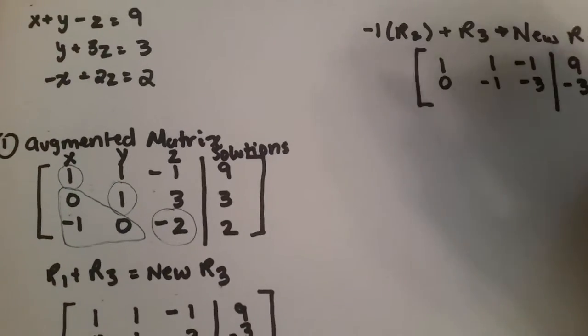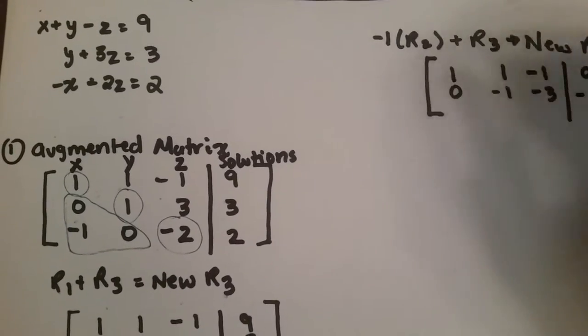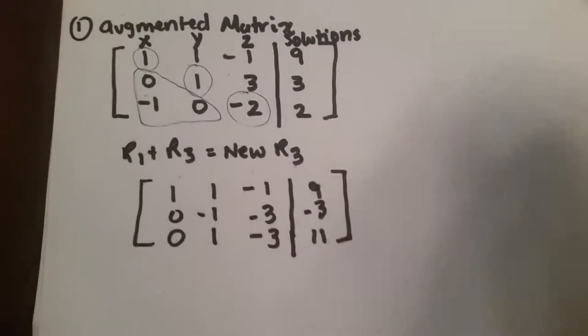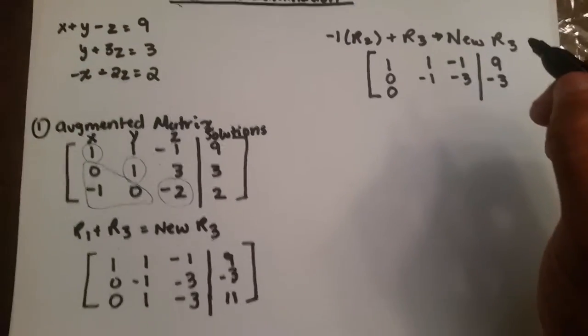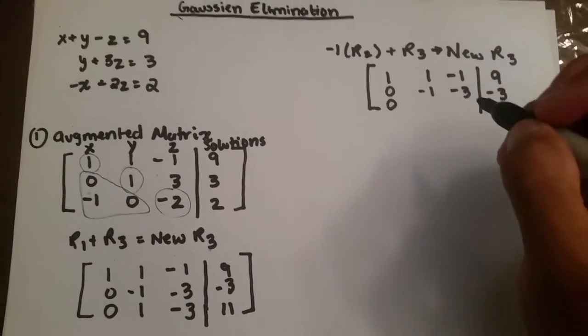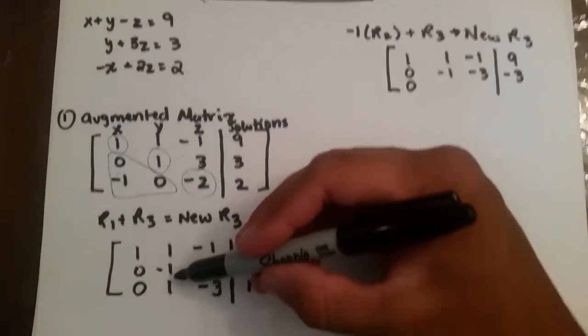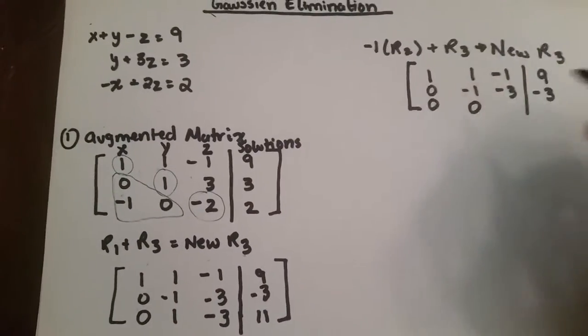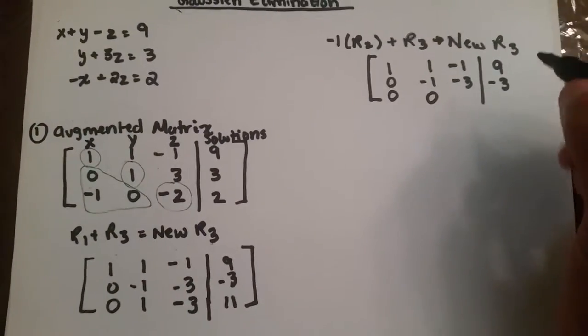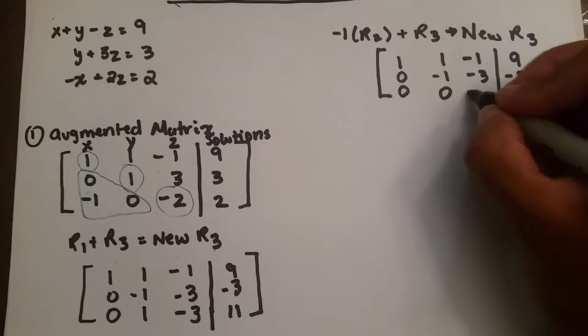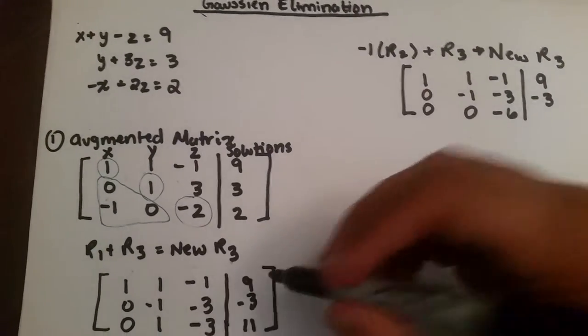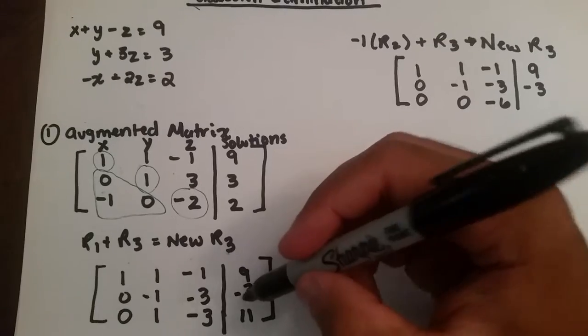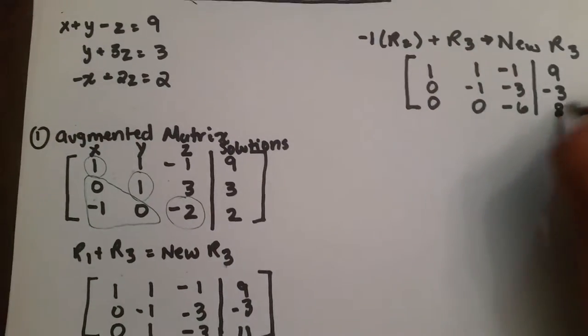And we do row 2 times negative 1 plus row 3, which will be 0 plus 0, which is 0, negative 1 plus 1, which is 0, and negative 3 plus negative 3, which is negative 6, and negative 3 plus 11, which is 8.